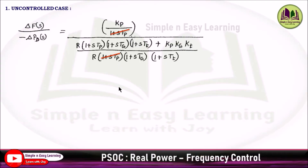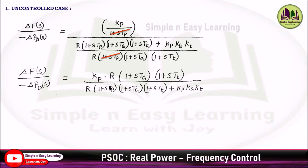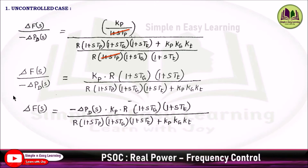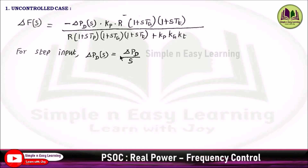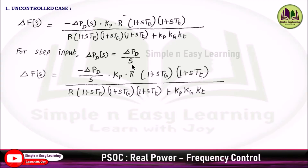We cancel (1 + sTP) from numerator and denominator. Taking R·(1 + sTG)·(1 + sTT) to the numerator, it becomes KP·R·(1 + sTG)·(1 + sTT) divided by the whole denominator term. Taking −ΔPD(s) to the right-hand side gives −ΔPD(s)·KP·R·(1 + sTG)·(1 + sTT) divided by the denominator. For step input, ΔPD(s) = ΔPD / s, so we substitute that.